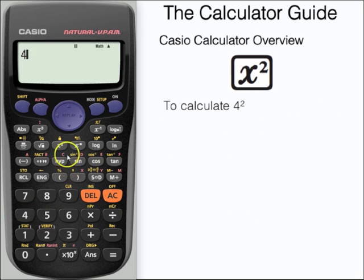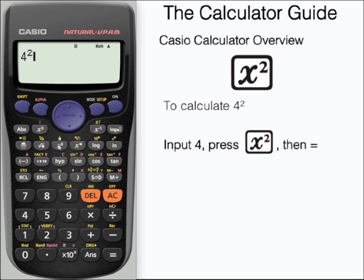We're going to have a look at the x-squared button now. We're going to calculate four-squared. Press four and then x-squared and then equals and here we have our answer sixteen.